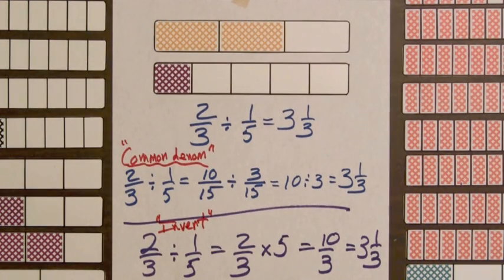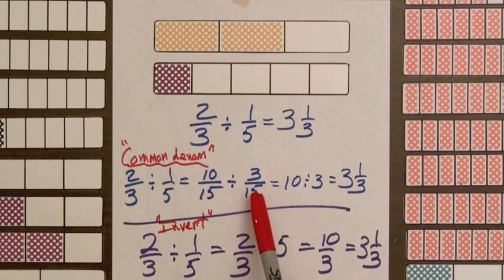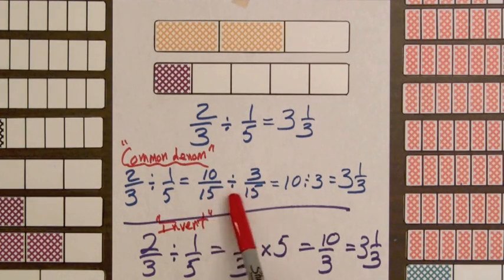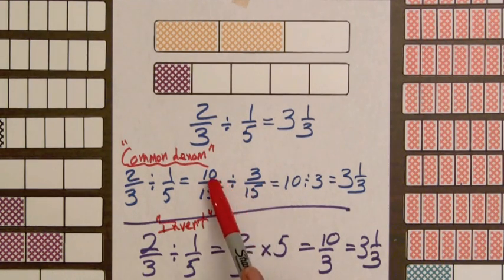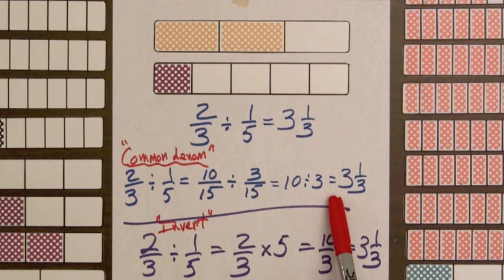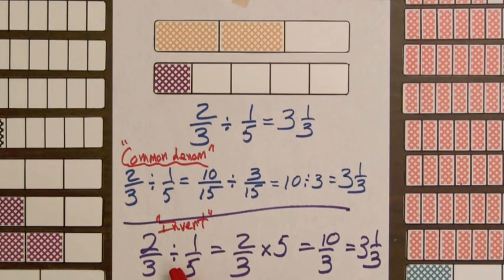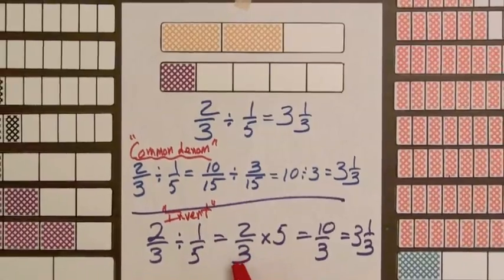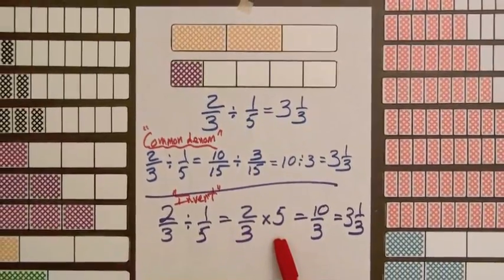The invert method is quicker than first getting common denominators. But there's something nice about the common denominator method. In this case, we have a common denominator of fifteen. The ten parts and three parts are the same size, so we merely divide by whole numbers. The division concept can be seen. But the invert method does not give a sense that one amount is being divided by another. It is easy to see why students using the invert method do not have a conceptual understanding for division of fractions.